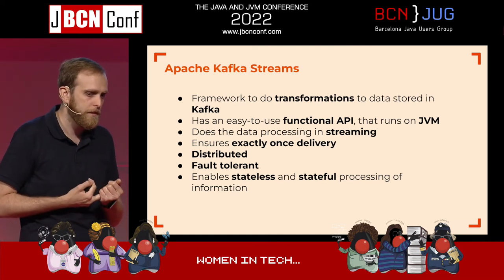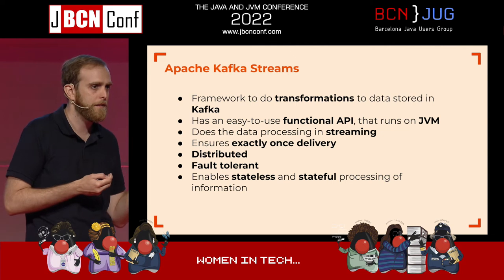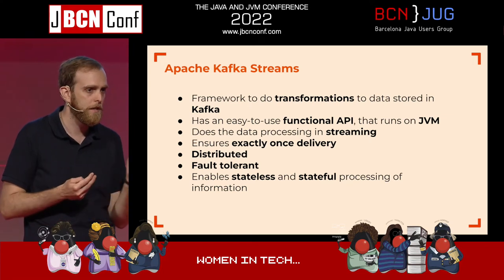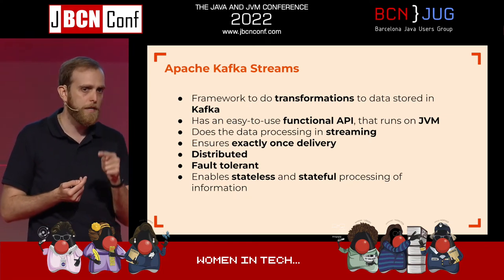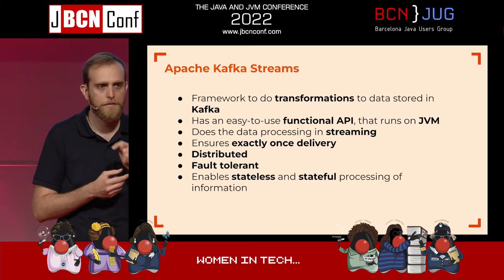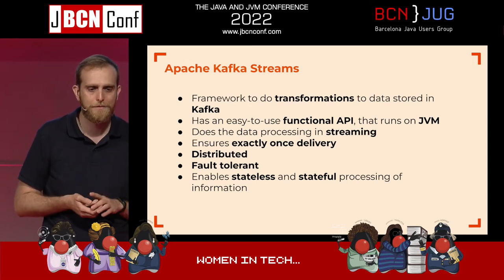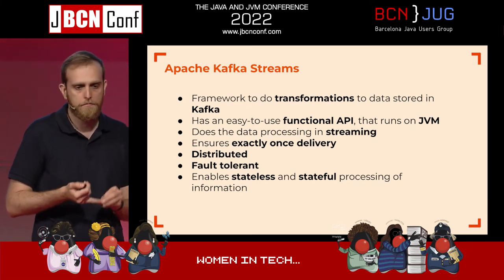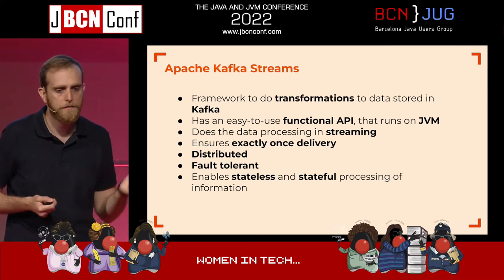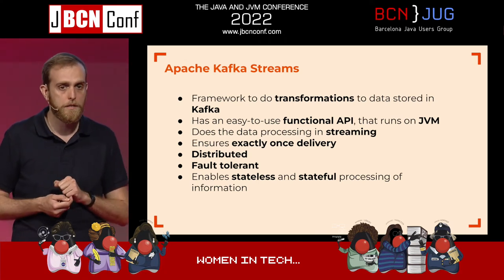The good thing about Kafka Streams is that it ensures exactly-once delivery of data — meaning data is not lost and not duplicated either. When you read a record, it will only go through the whole transformation process just once, which is rare but very important when you need it. The framework itself is distributed and fault-tolerant, and for us it's super important that it enables both stateless and stateful processing of information.